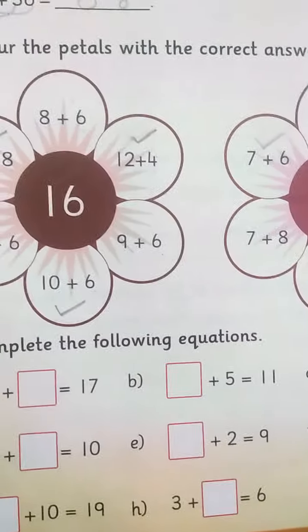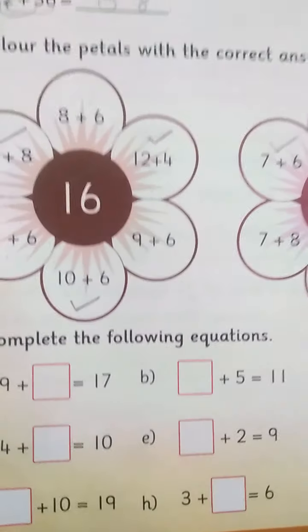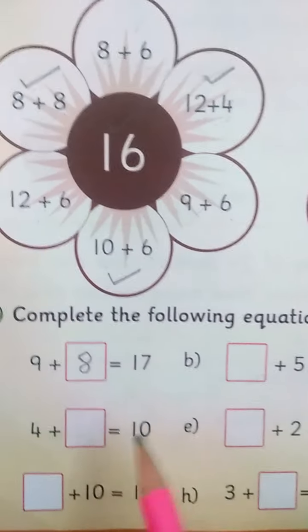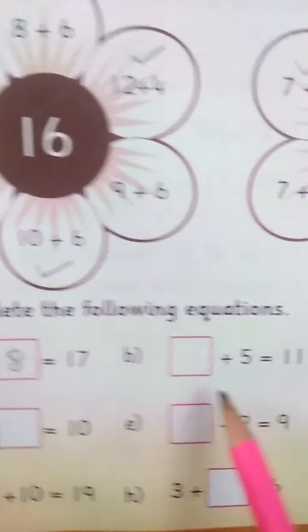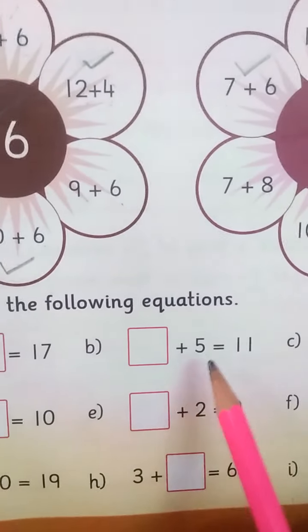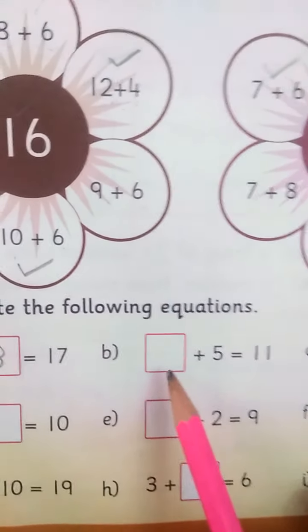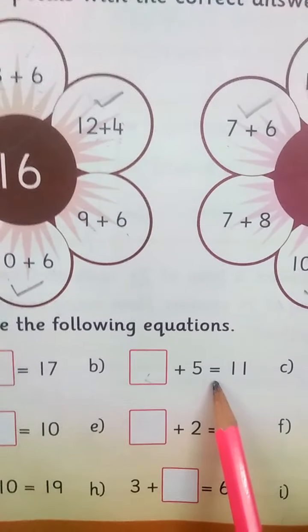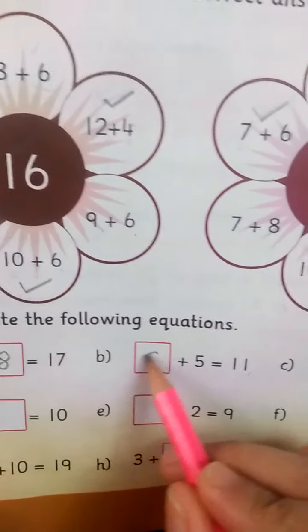Dash plus 5 is equal to 11. Which digit will give us 11? The answer is 6.